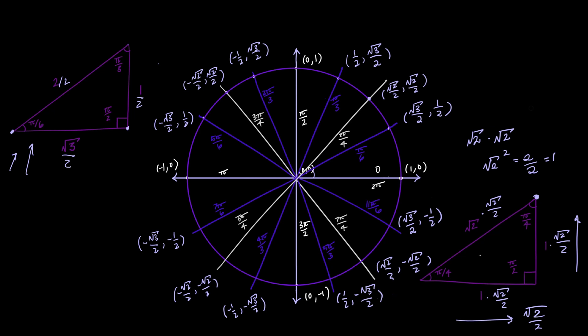That's how you can construct the entire unit circle basically off the top of your head with an understanding of the special triangles and the fact that a whole circle is 2 pi radians.